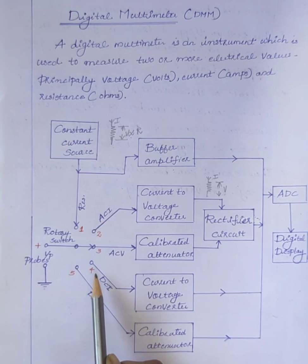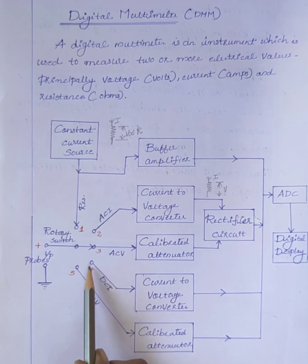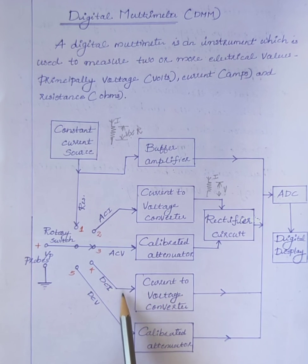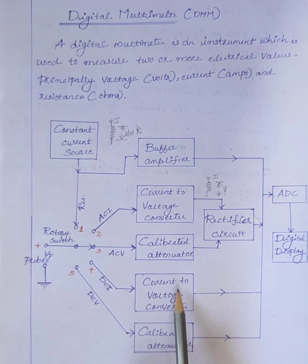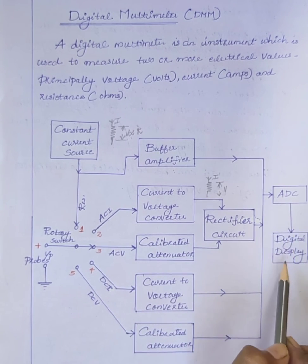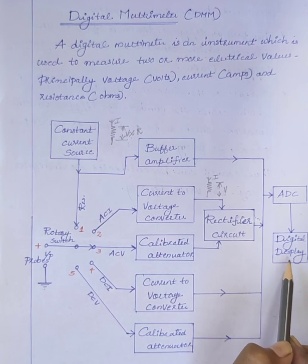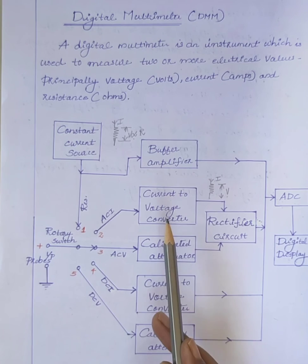Next is the measurement of DC current. For the measurement of DC current, the rotary switch is connected to terminal 4. The current to be measured is given to a current to voltage converter, and the voltage which is proportional to the value of the unknown DC current is given to the analog to digital converter and displayed on the digital display.